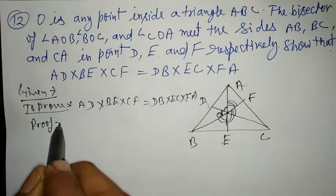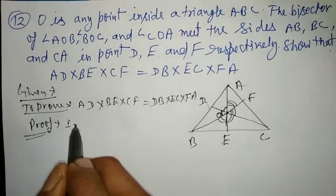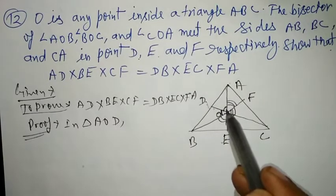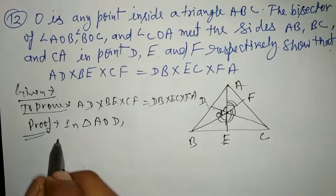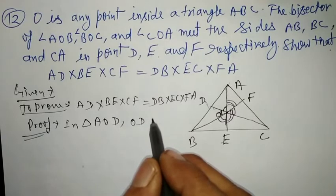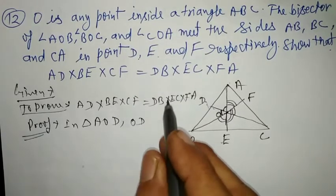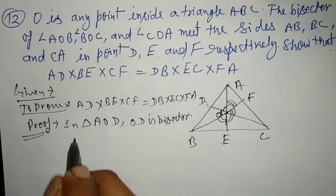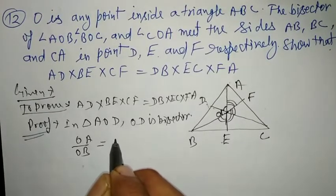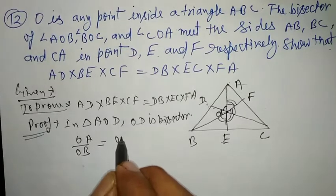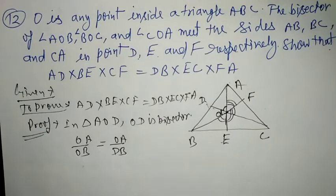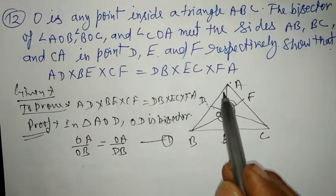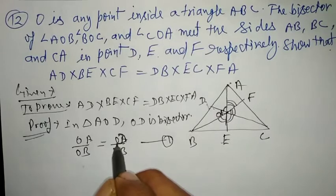Proof: In triangle AOD (with OD as angle bisector), OA upon OB is equal to AD upon DB. This is equation 1.